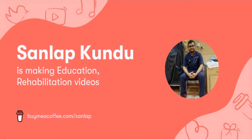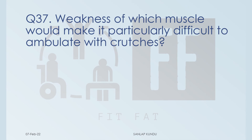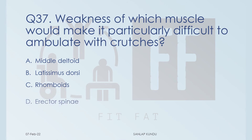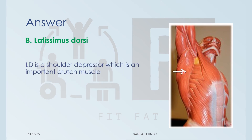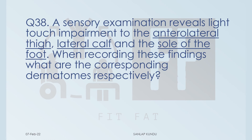If you like my work and want to support me, you can contribute by donating any amount suitable for you — the donation link is in the comment box. Question number 37: weakness of which muscle would make it particularly difficult to ambulate with crutches? Options: A) medial deltoid, B) latissimus dorsi, C) rhomboids, D) erectus. The answer is option B, latissimus dorsi. This muscle is an important shoulder depressor and a key crutch-walking muscle, so weakness of it will create significant trouble with crutch walking.